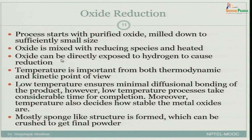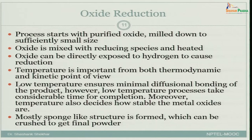The oxide can be directly exposed to hydrogen to cause reduction. Temperature is important from both thermodynamic and kinetic points of view. Above a certain temperature, the oxide will be stable; below that temperature, the pure element will be stable. For kinetics, higher temperature implies faster kinetics. You must find an optimum temperature where the reduced species is stable and the kinetics is high enough.